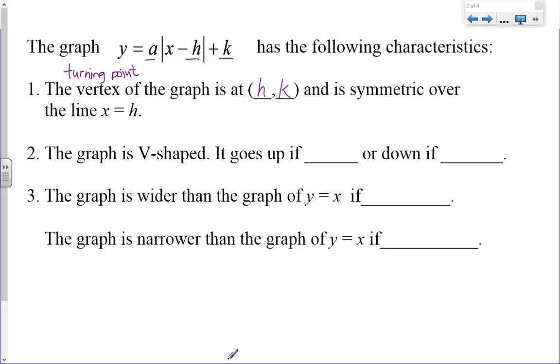The graph is V-shaped, so that's where we see that vertex there at the bottom of the V. And it will go up if a is positive, so if a is greater than 0, or down if a is negative, so if a is less than 0.